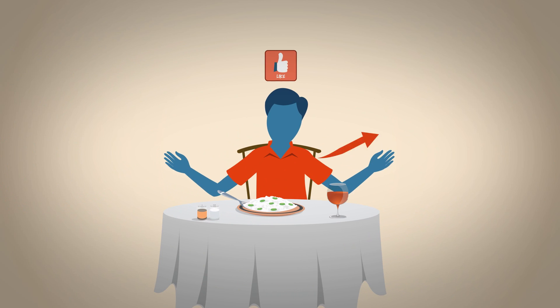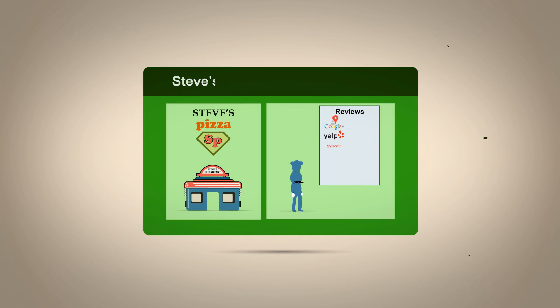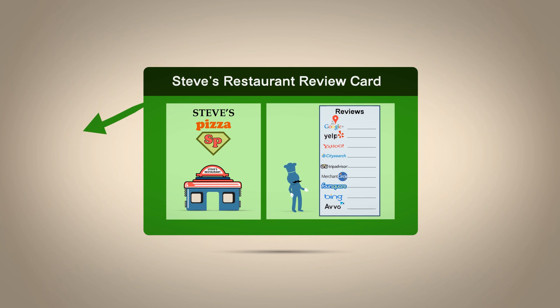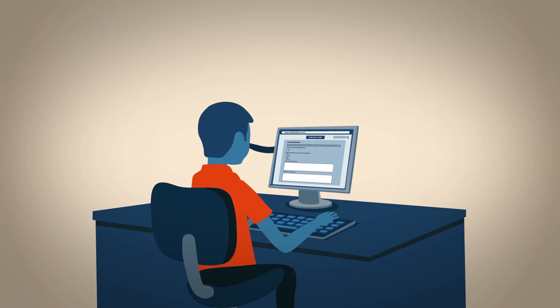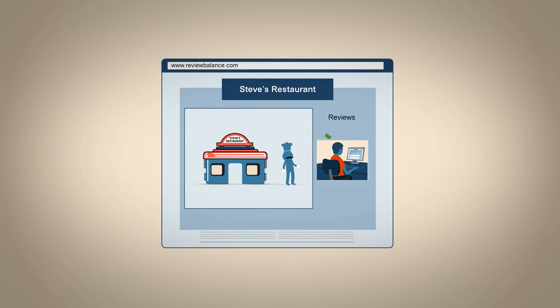If he got a thumbs up, the customer was directed to any review site that Steve determined to post the good review. If it was a bad rating, the customer filled out a complaint form that was emailed only to Steve and appeared nowhere else.